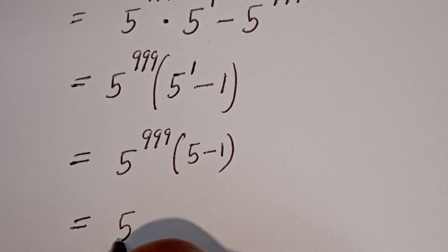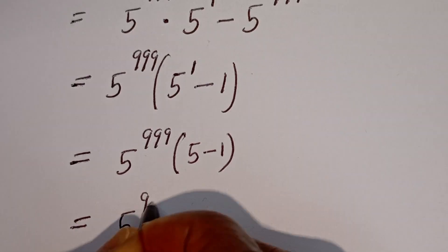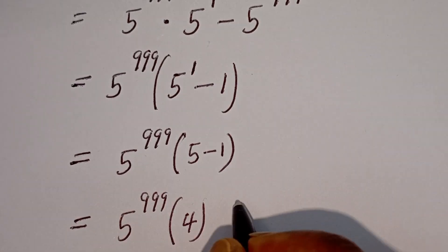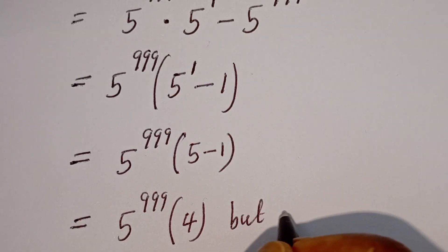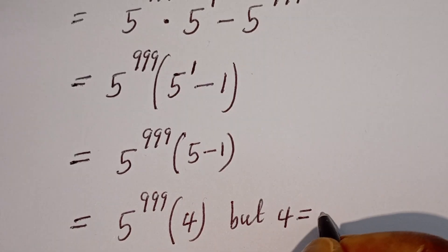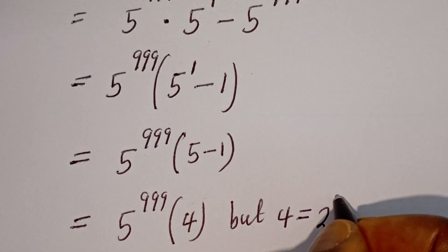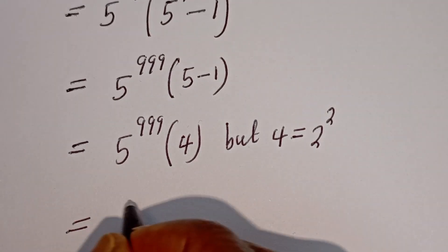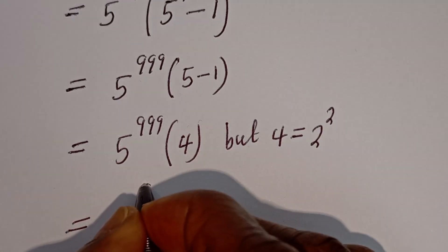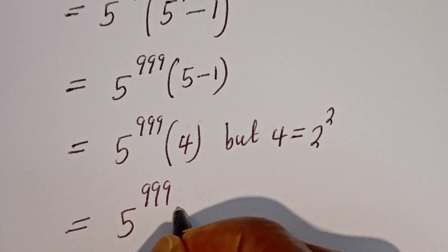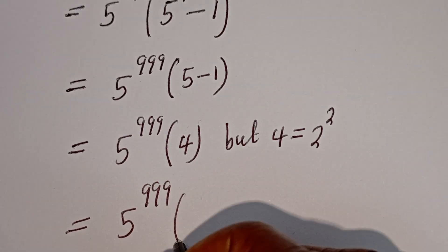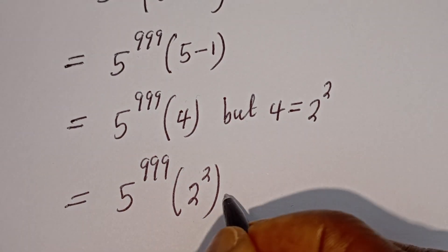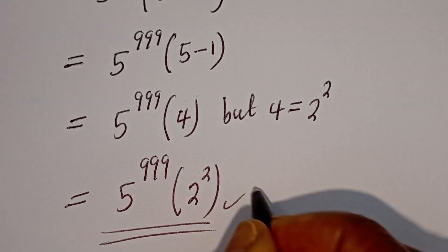Here is 5 to the power of 999, bracket, 5 minus 1, that is 4. Now 5 to the power of 999 multiplied by 4, and since 4 is equal to 2 squared, this equals 5 to the power of 999 multiplied by 2 squared. This is the final answer.